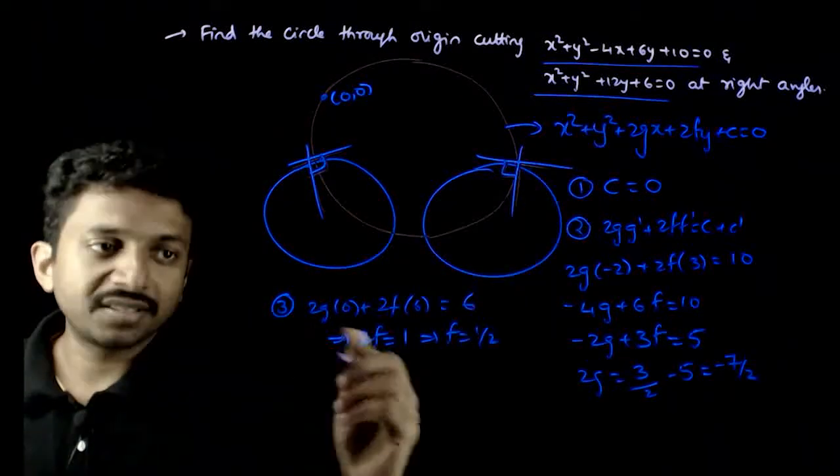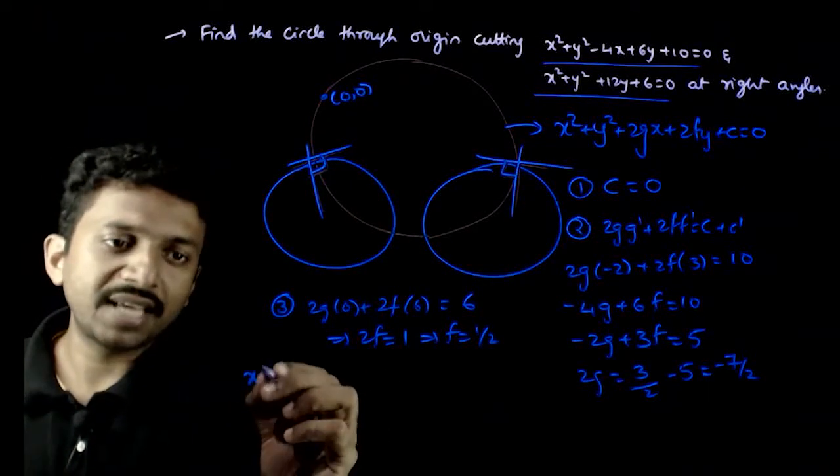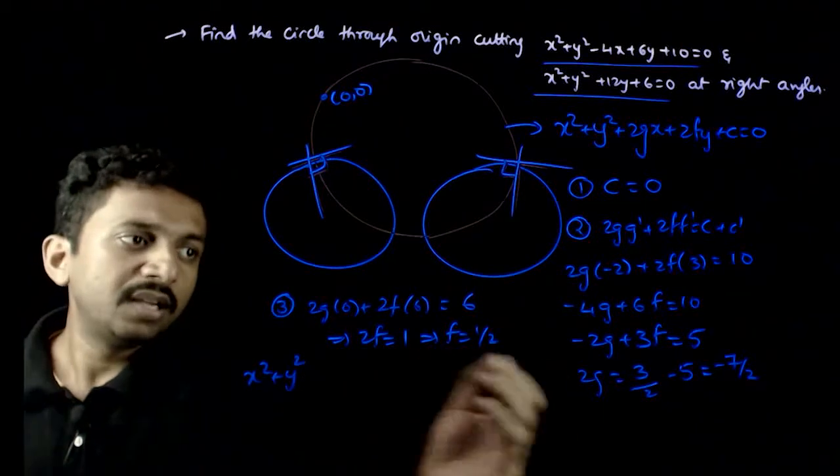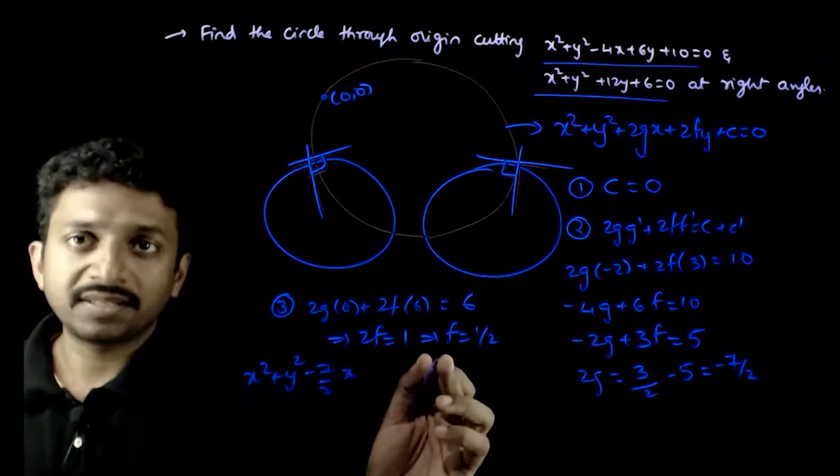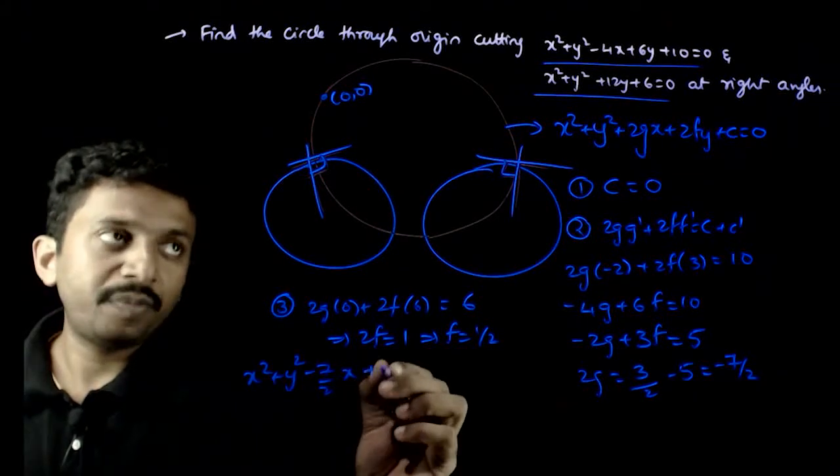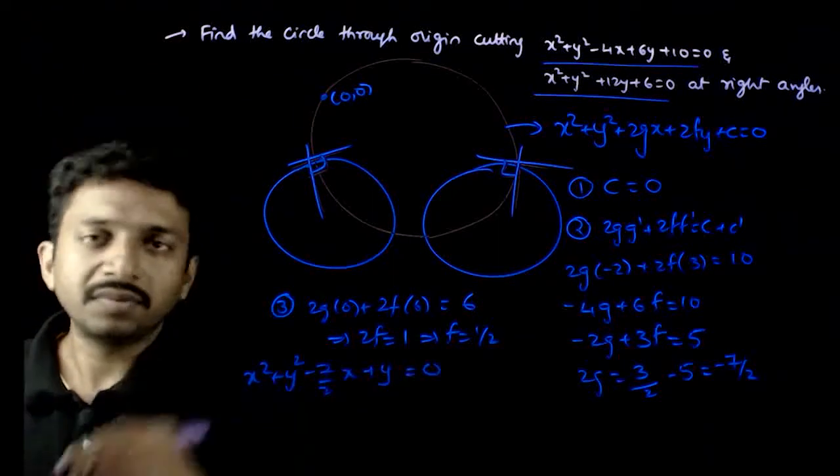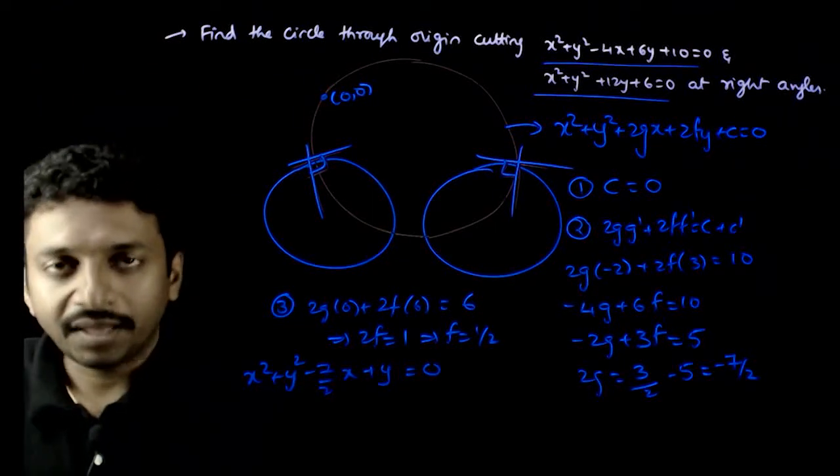So, you can just substitute it in this circle. So, the required circle is x square plus y square plus 2g that is minus 7 by 2 times x plus 2fy plus y is equal to 0. Thank you.